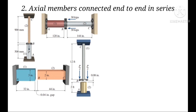The second problem is about axial members connected end-to-end in series. Problems in this category include two or more members connected end-to-end. If there are no gaps or clearance, the member deformations must sum to zero: delta 1 plus delta 2 equal to zero. In other words, an elongation in member 1 is accompanied by an equal contraction in member 2.